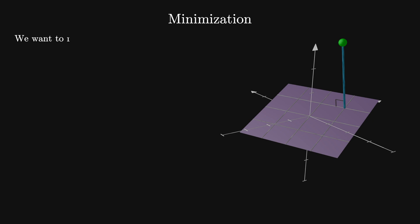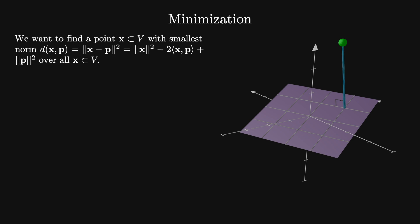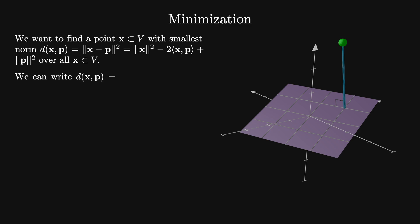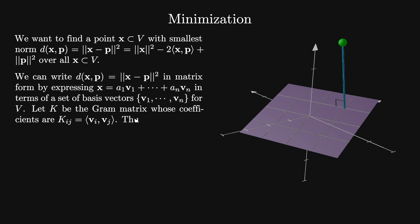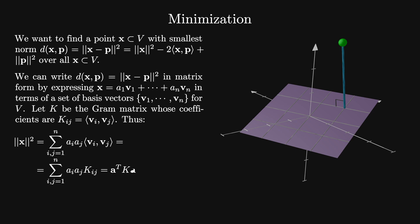Let's go back to our example to implement this. We want to find a point x in the subspace v with the smallest value for d equals the squared norm of x minus p, which equals the squared norm of x minus twice the inner product of x with p plus the squared norm of p. To solve this, we write x equals the sum on i of a_i times v_i, where the v_i's are a set of basis vectors for v. Let K be the matrix of inner products of basis vectors — such matrices are called Gram matrices. Then the squared norm of x equals a^T K a, and the inner product of x with p equals a^T b, where the i-th component of b is the inner product of v_i with p.